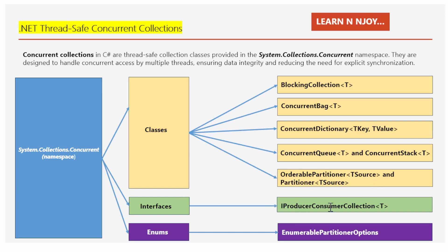Next, we have the IProducerConsumerCollection interface. Think of it as a set of rules that help different parts of the program — like different cooks in the kitchen — add and take items from a shared collection safely without bumping into each other. It's like having an organized system where one cook can add ingredients to a shared pantry while another takes ingredients out without any confusion. Additionally, we have EnumerablePartitionerOptions as an enum — settings that control how items are divided up and managed in a shared workspace, like deciding who handles dough making, who bakes, and who decorates.